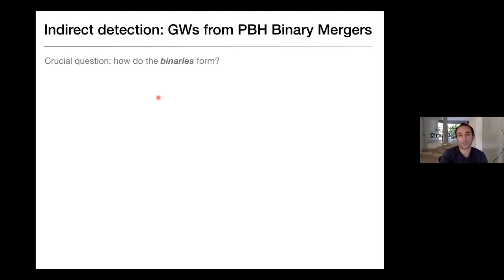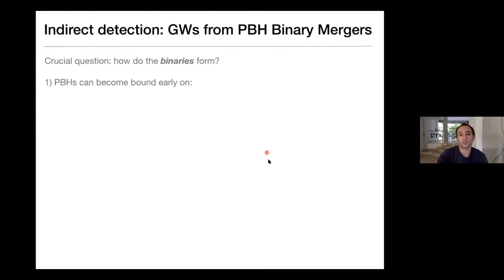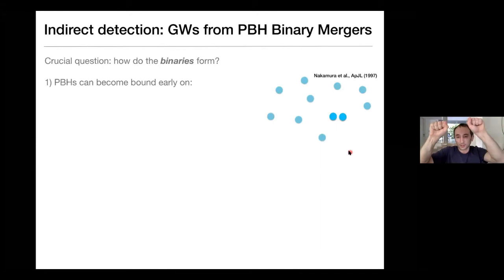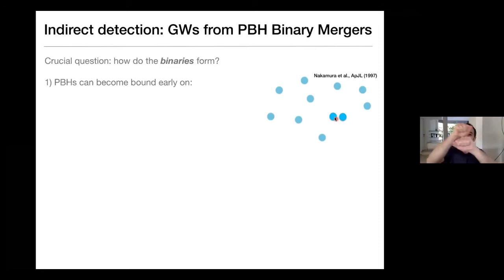I've given some introduction for gravitational waves and the LIGO detector. Now the critical question, if we want to discuss gravitational waves coming from the coalescence and merger of primordial black holes, is how the binaries form. We have two basic models. One is that they become bound early on — some initial random configuration of primordial black holes forms, and each black hole has its closest partner. Once the universe becomes matter dominated, these two black holes start approaching one another, finding each other in very eccentric orbits.